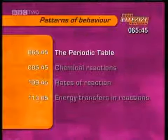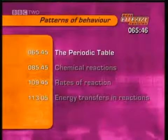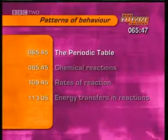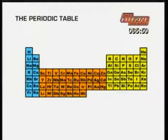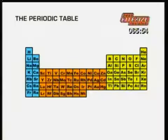First, the periodic table. The periodic table is a table of all the known elements, organised according to their properties and their atomic structure.